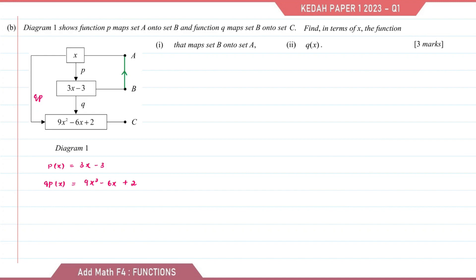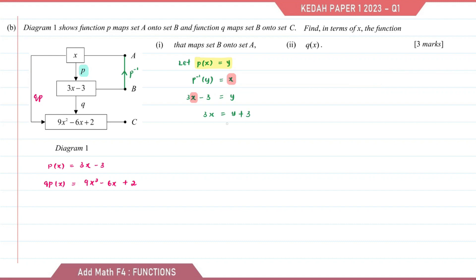Back to question number 1. The function that maps set B onto set A is the inverse function of p, as it is in the opposite direction of p. We let p(x) equal to y, then the inverse function p of y equals x. Substituting px with 3x minus 3 equals y, we let x become the subject: 3x equals y plus 3, then x equals y plus 3 over 3. Replacing y with x, the inverse function is x plus 3 over 3.